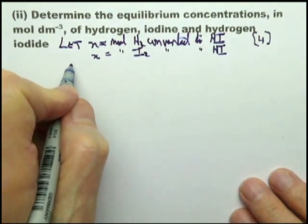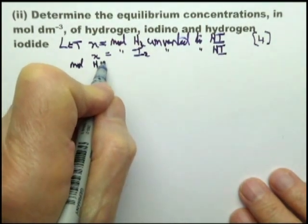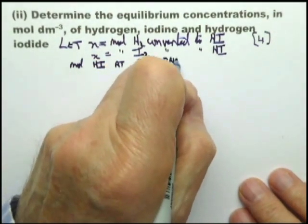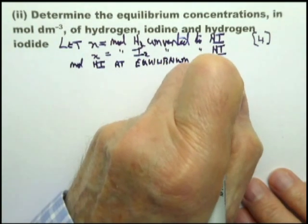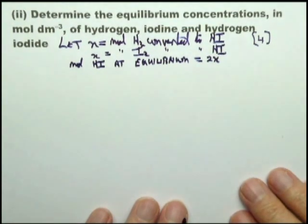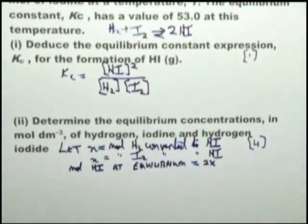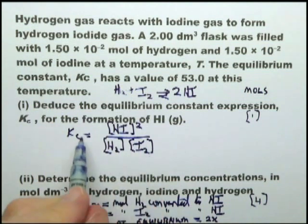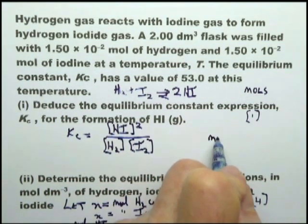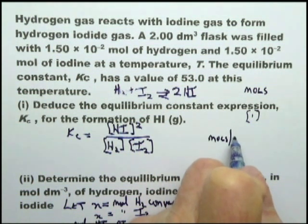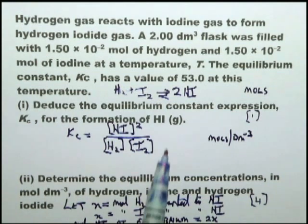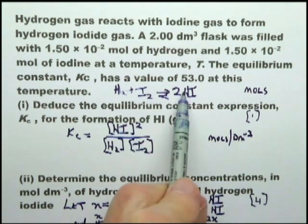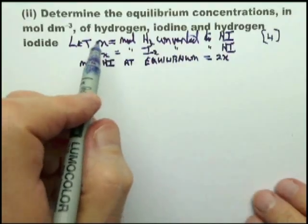Now, the important thing to notice is that this equation is about moles. This expression is about moles per decimeter cubed. So this is about moles, and this is about concentrations. It's important to remember the difference. We're going to convert these moles into concentrations.